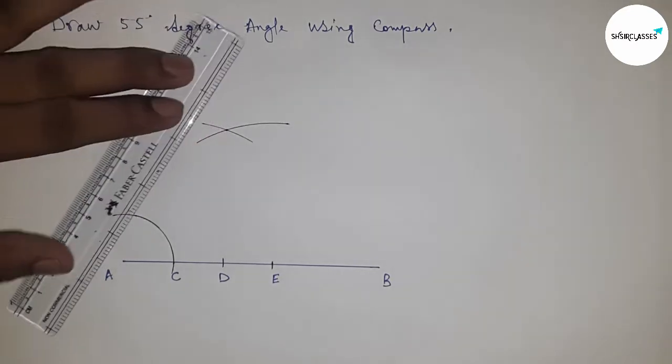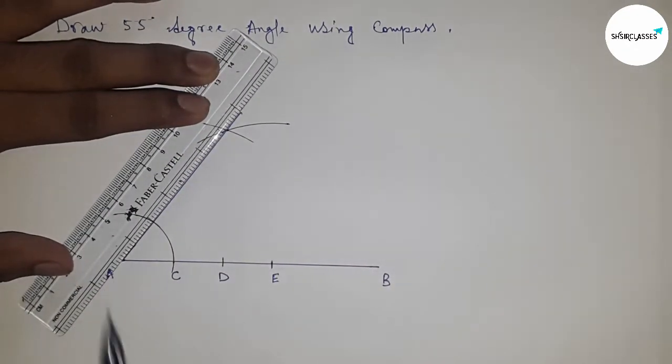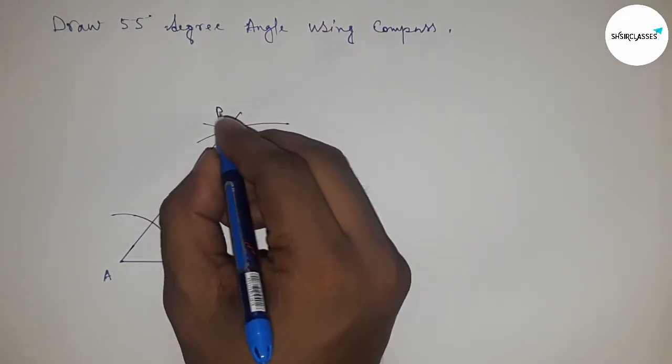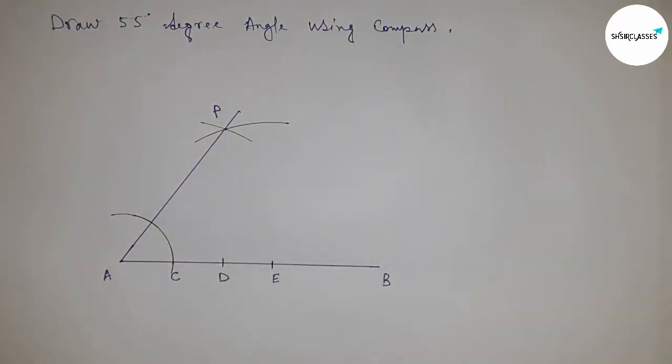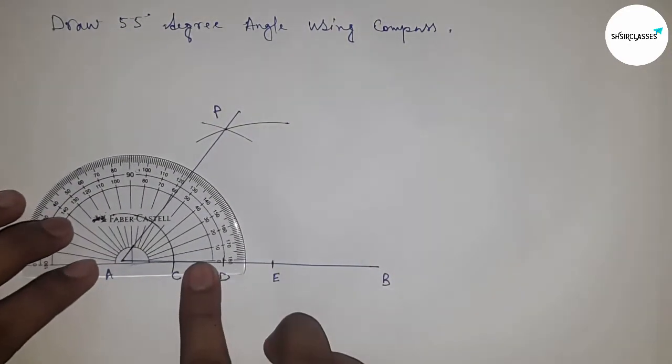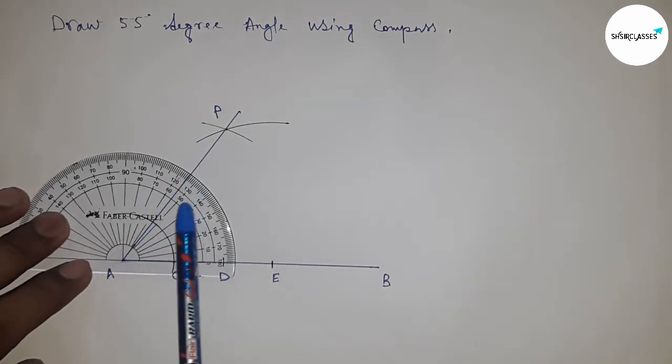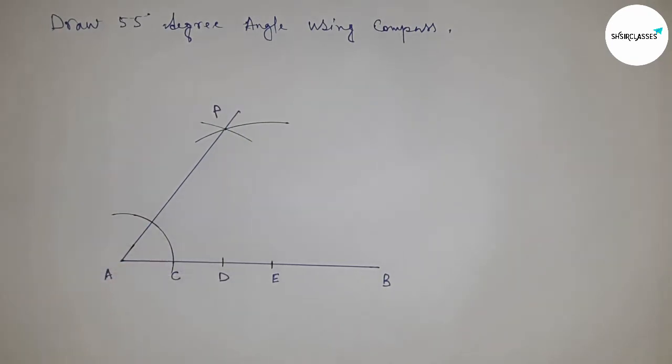So joining this to get 55 degree angle. So this is point P, so angle PAB is 55 degree angle. So now checking whether it is 55 or not. So this is perfectly 55 degree angle.